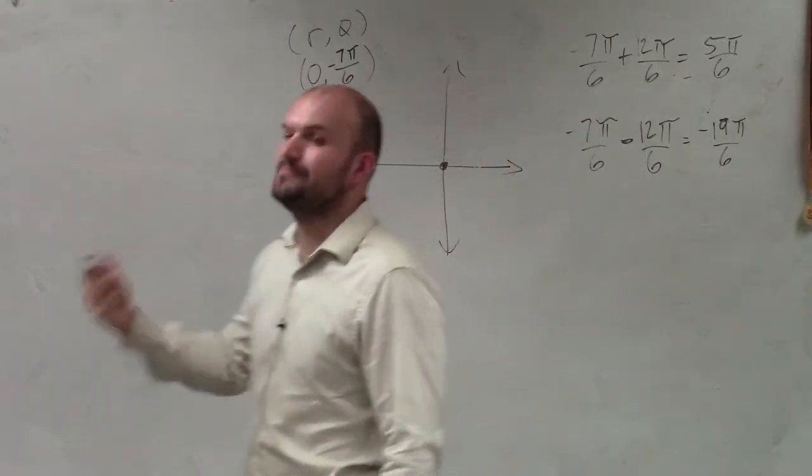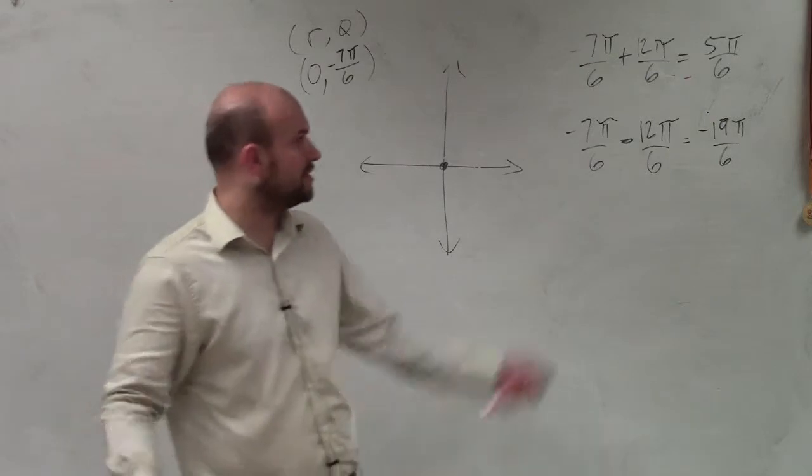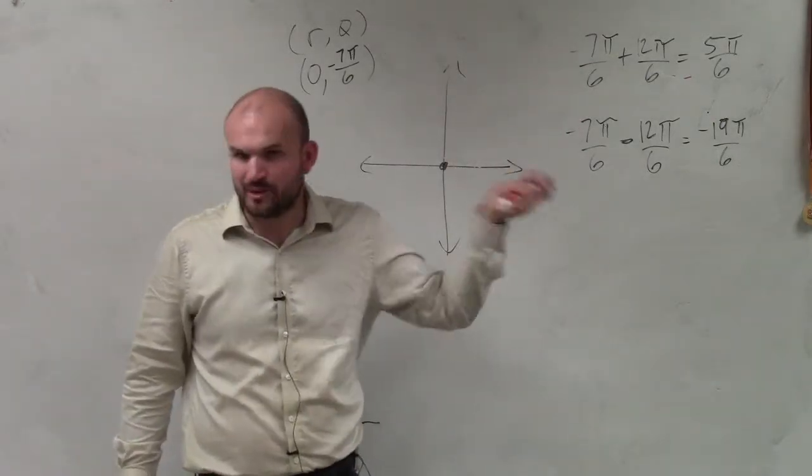Now, again, guys, remember coterminal angles. There's infinite many number of coterminal angles. So you could keep on adding 2 pi. You could keep on subtracting 2 pi and so forth.